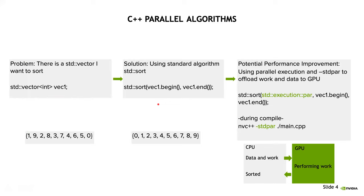Here is a very simple workflow we can walk through. Imagine we have a problem: there's a vector we want to sort. We have a vector called vec1 with, just for this example, 10 unsorted ints. Our solution is simply to apply the standard algorithm std::sort to the vector, and you can see that we're all sorted out below. Stdpar comes into play on the far right as a potential performance improvement — very easily, we add std::execution::par to our function call, and then we compile with -stdpar. And that's pretty much all you need to get this code and data onto the GPU.